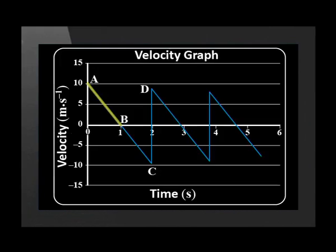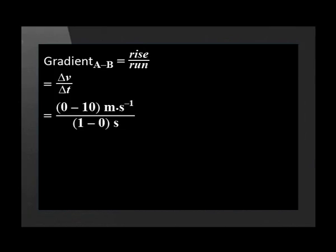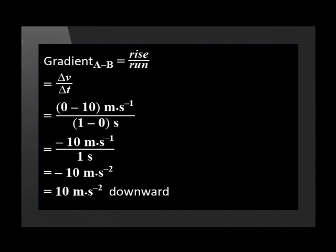The next question asks us to calculate the ball's acceleration between A and B. The gradient of a VT graph gives the acceleration of the object. The y-interval of this part of the graph is minus 10 meters per second and the x-interval is 1 second. We substitute these values into the equation and find an answer of negative 10 meters per second squared — an acceleration of 10 meters per second squared downward. We expected this since the ball is in free fall during this interval. Remember, the acceleration due to gravity has been simplified to 10 rather than 9.8 meters per second squared downward.